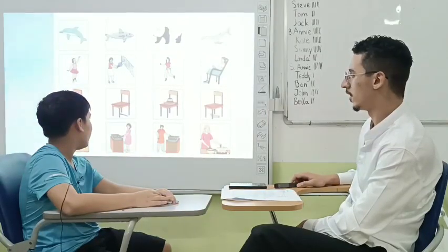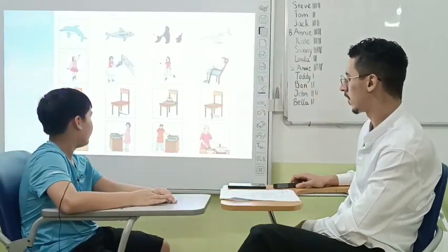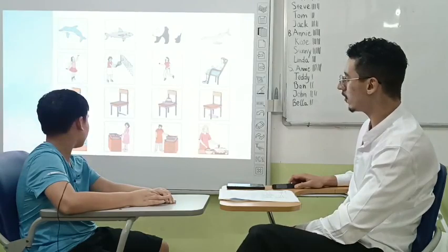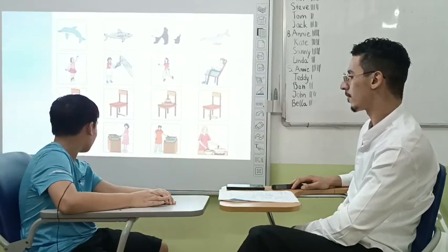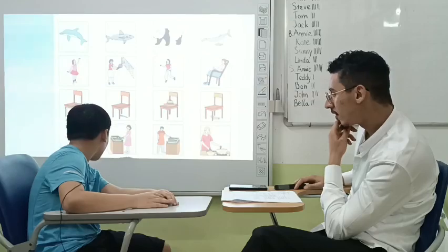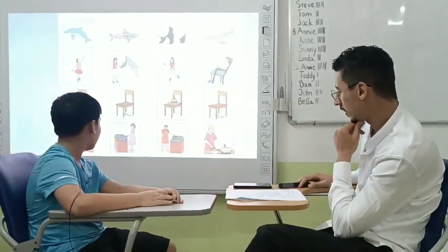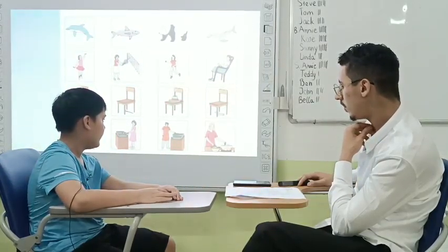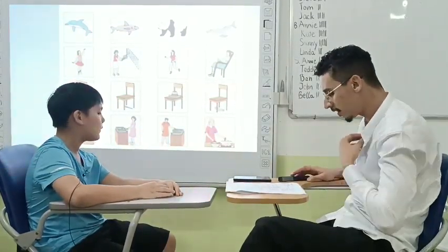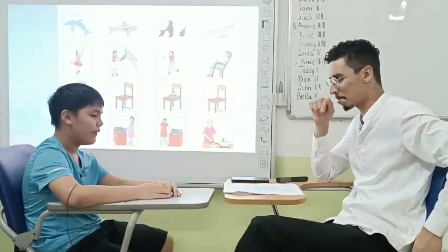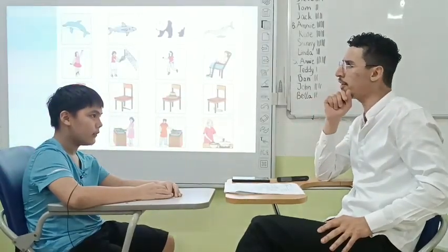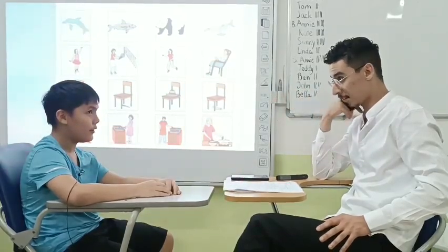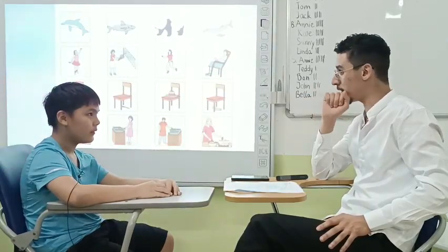Now let's move to the third set. Which one is different? It's picture 3. Why? Because in pictures 1, 2, and 4, the animal is under the chair with its head on the chair. Now let's move to the last set. Which one is different? It's picture 4. Why? Because in pictures 1, 2, and 3 they are cooking, but in picture 4 the girl is making a cake. Very good job. What's your favorite color? My favorite color is red. What's your favorite food? My favorite food is pizza. What's your favorite sport? My favorite sport is football. Me too, I like it a lot. Thank you so much Chris, and goodbye. Goodbye, goodbye teacher.